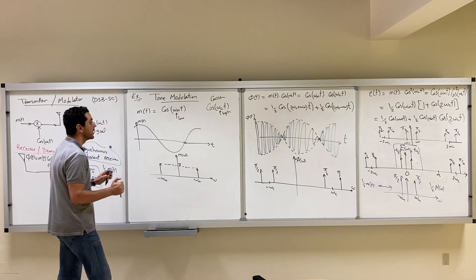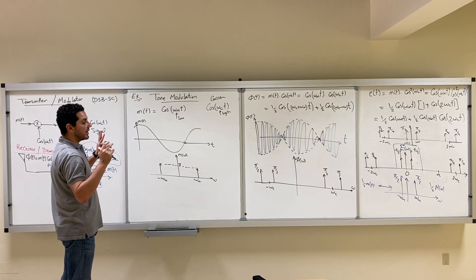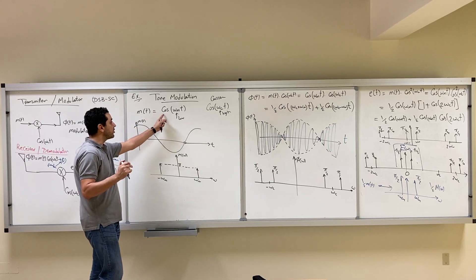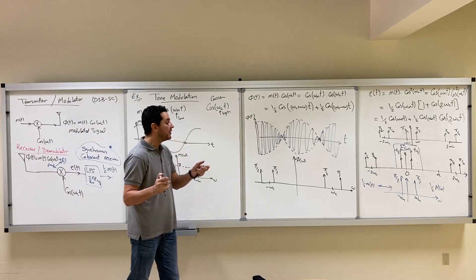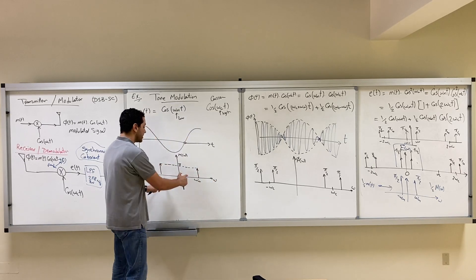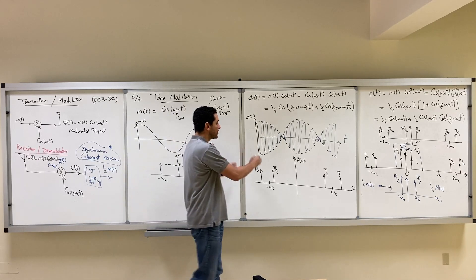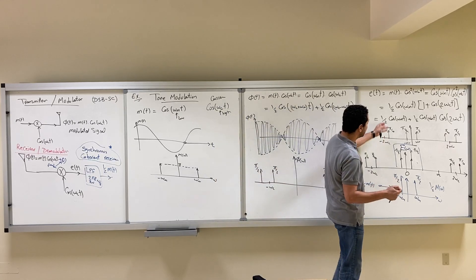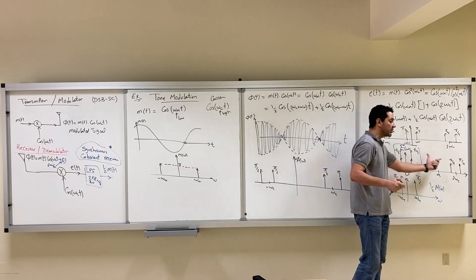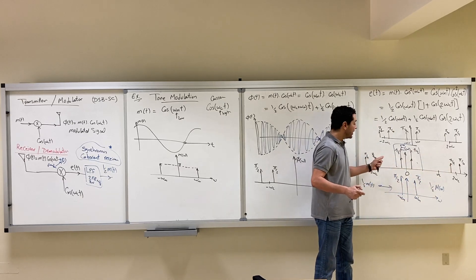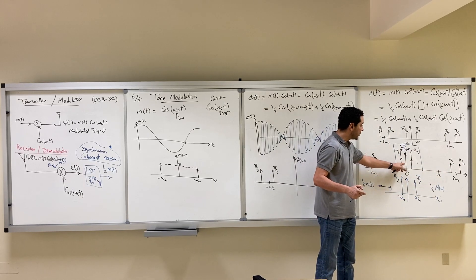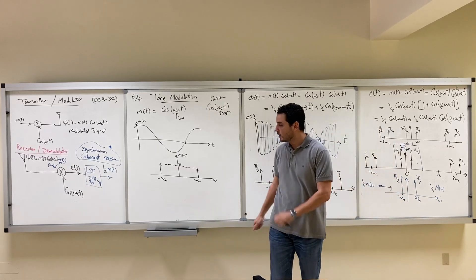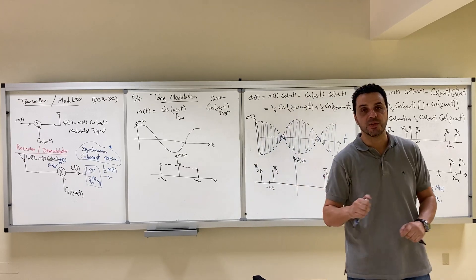So we have applied double sideband suppressed carrier modulation to tone modulation, where our information signal is a cosine — which appears as two deltas in the frequency domain. In the modulator we computed the transmitted signal. At the receiver we multiplied by cosine again, shifted the spectrum, and after passing through a low-pass filter we recovered half m(t). We'll stop here and see you in the next video.